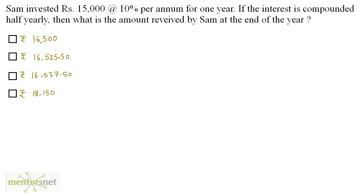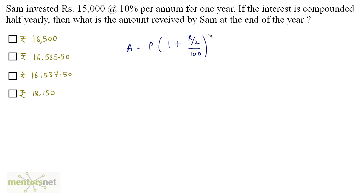Sam invested Rs. 15,000 at the rate of 10% per annum for one year. If the interest is compounded half-yearly, what is the amount received by Sam at the end of the year? Because the interest is compounded half-yearly, the formula changes: A = P × (1 + R/2 / 100)^(2N).